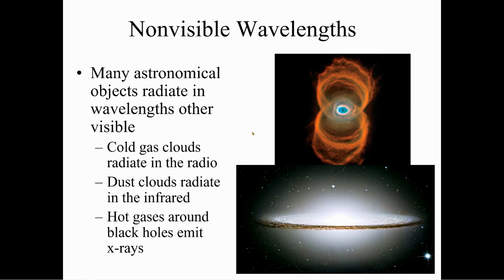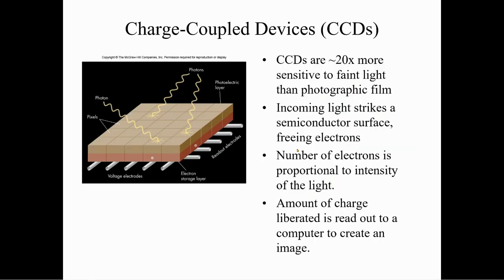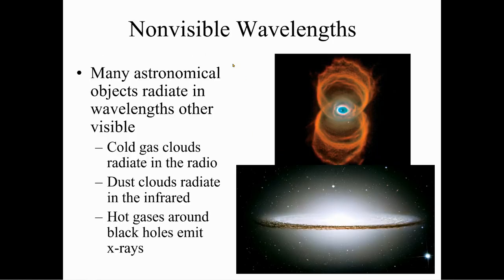Non-visible wavelengths — sometimes we look at things outside of what the human eye can see. Many astronomical objects radiate in wavelengths other than visible light. Cold gas clouds radiate in the radio wavelengths; dust clouds radiate in infrared; hot gases around black holes emit X-rays. These different telescopes capture those wavelengths and translate them into images we can see.